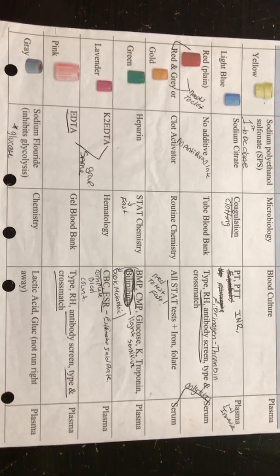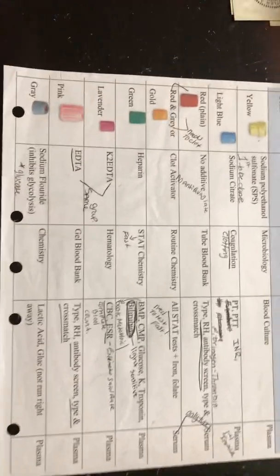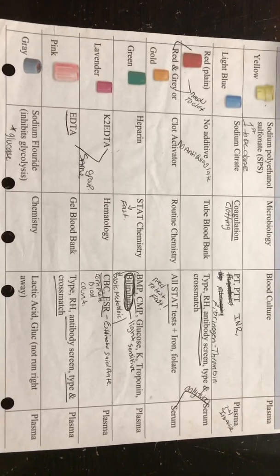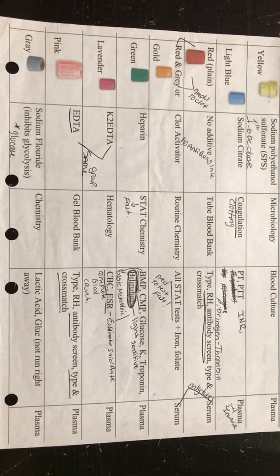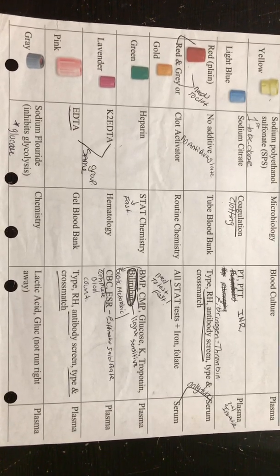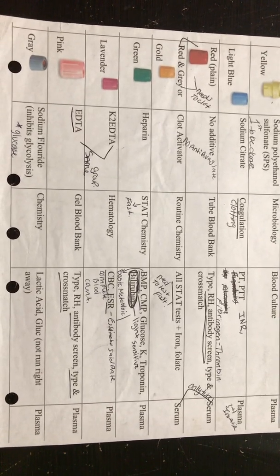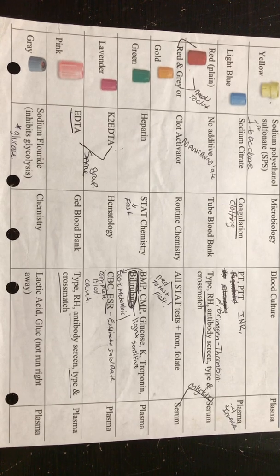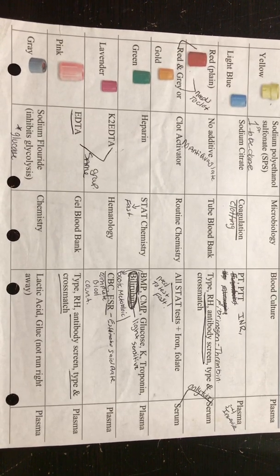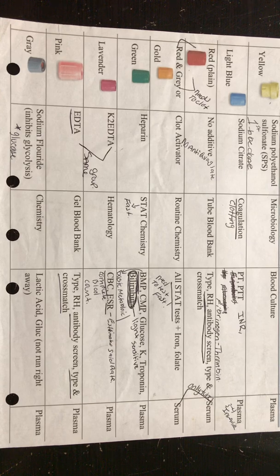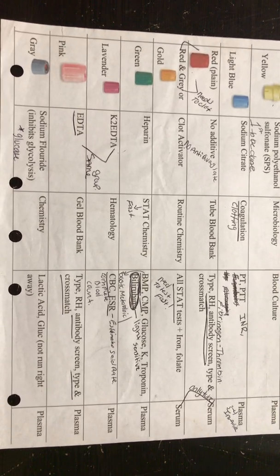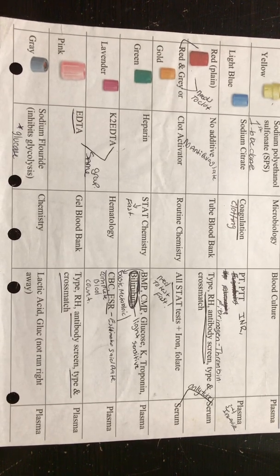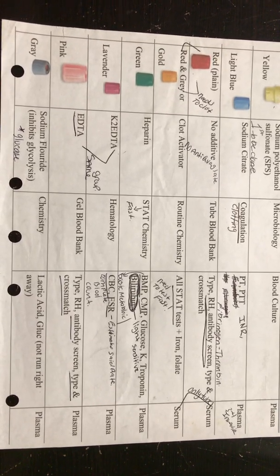When I say what's in a green tube, you'll say heparin. What tests go in the tube? You'll say BMP, CMP, bilirubin, ammonia, and you do your list. What goes in a lavender tube? EDTA is in lavender tubes. What tests are we doing in a lavender tube? CBC. Pink? Type and cross match. Gray? Glucose.